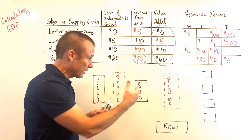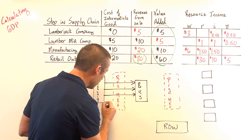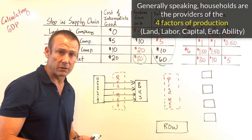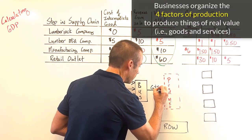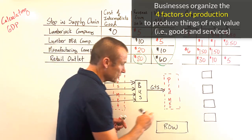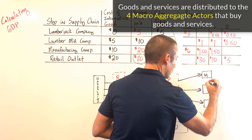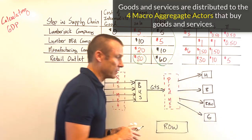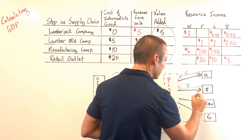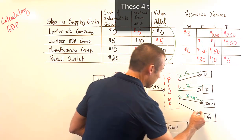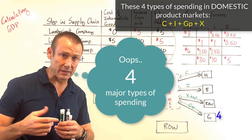Now for the income approach. Households bring labor, land, capital, and entrepreneurial ability to businesses. Businesses use those four factors of production to produce goods and services, which go to the product market. The four macro aggregate actors who spend on goods and services are households, businesses, the rest of the world, and the government. Their spending is called consumption, investment, export expenditures, and government purchases respectively.